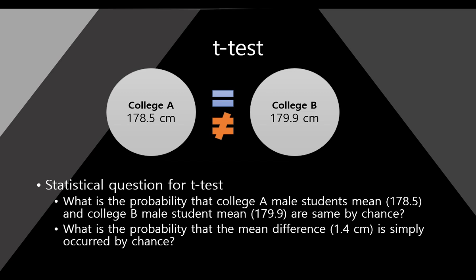The mean difference is 1.4 cm. We just want to know what is the probability that this mean difference is simply occurred by chance. If this probability is small, maybe there are some reasons. But if this probability is large, it means it occurred by chance.